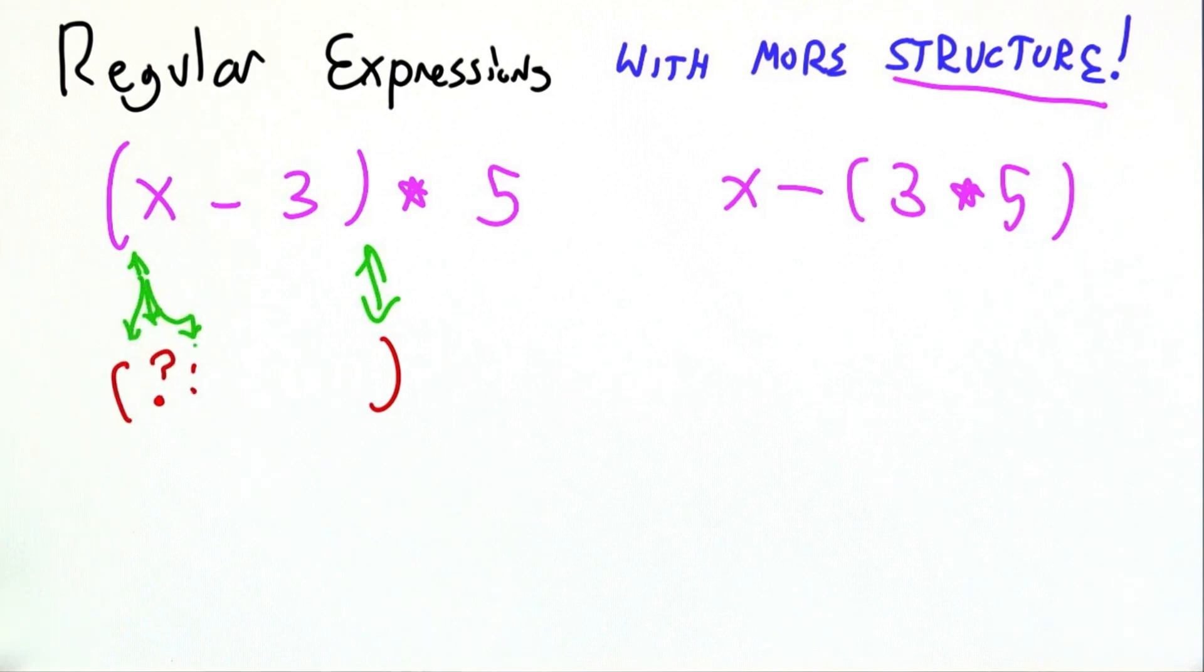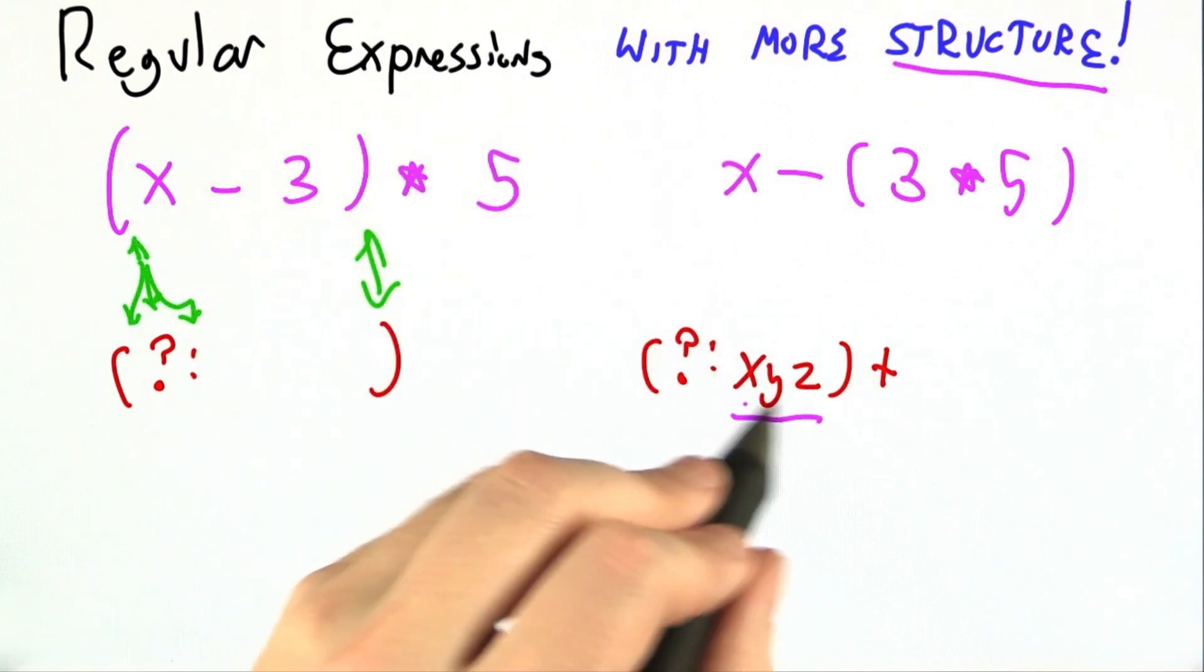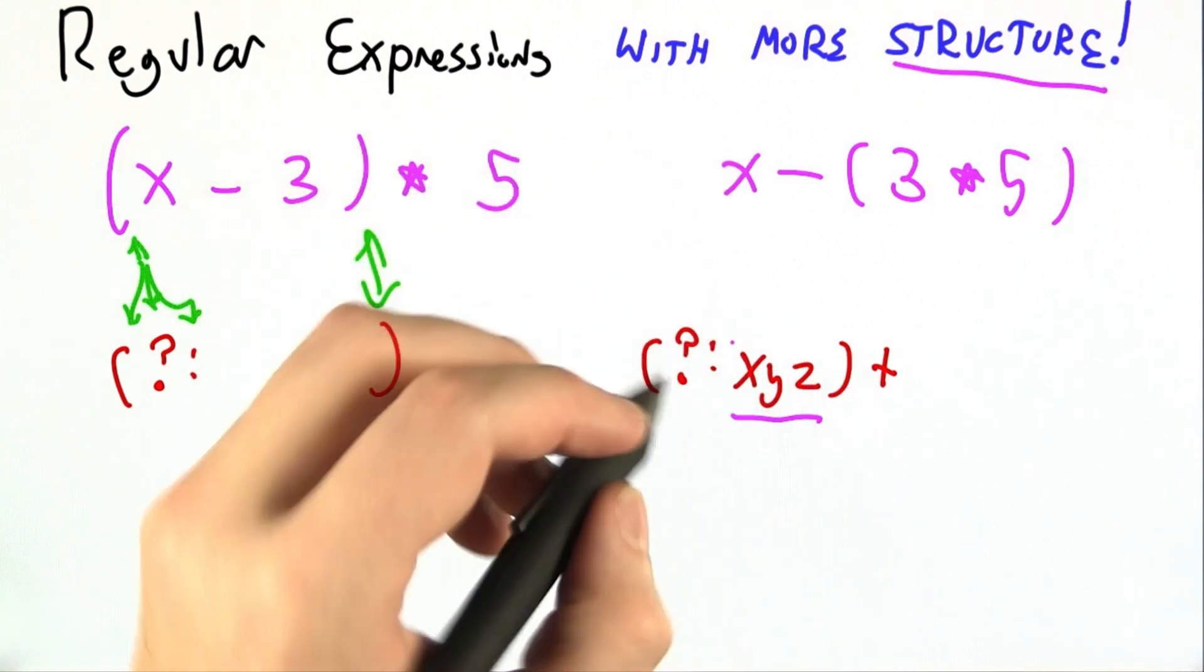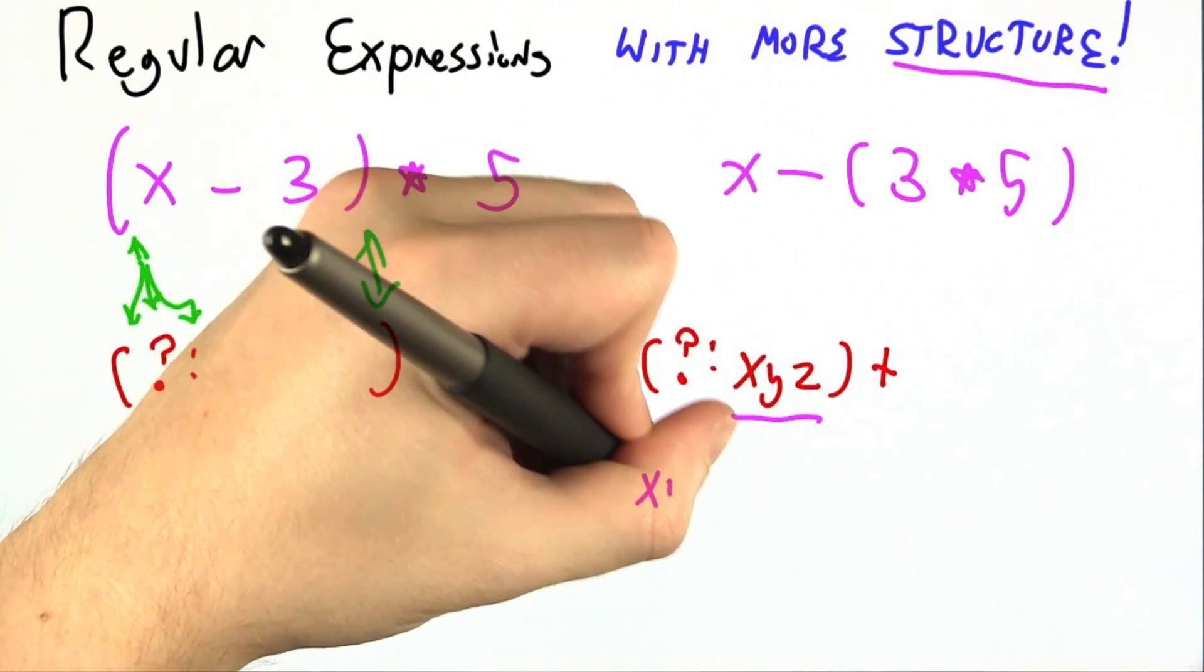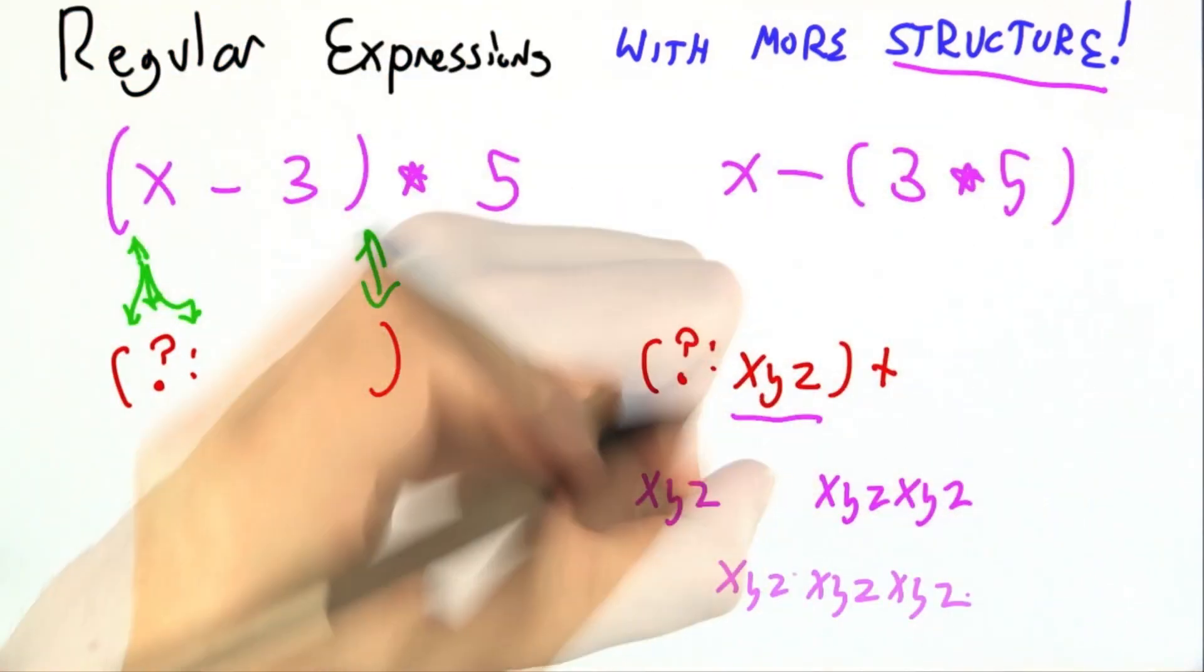open question mark colon. As a simple example, this regular expression makes a group around x, y, z, and then this whole thing can be repeated one or more times. So some strings are x, y, z, x, y, z, and so on.